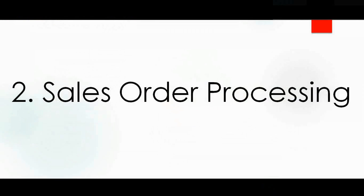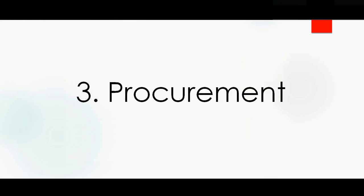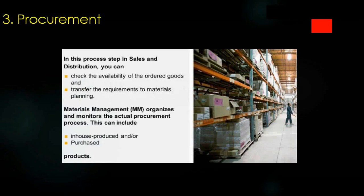In the first step we create a quotation or inquiry in the system. Then we move to the second step — sales order processing. We send the quotation to the customer, the customer is happy and wants to place an order, so we process the sales order. The order contains all information: customer address, shipping details, pricing, material, and quantity.